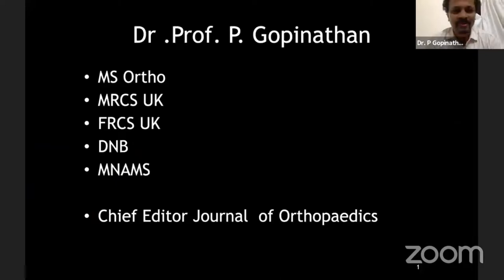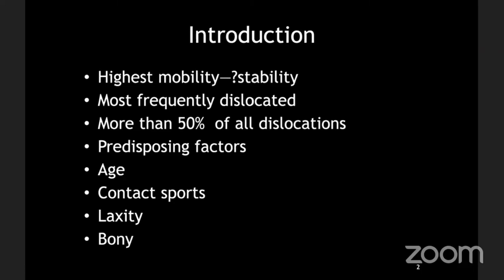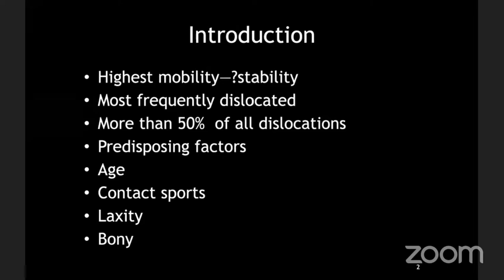Thank you Dr. Rajagopal and IOA for giving this opportunity to discuss this topic. The shoulder joint is one where we see maximum instability and mobility at the expense of stability. It is the most frequently dislocated joint, with more than 50% of all dislocations occurring in the shoulder.